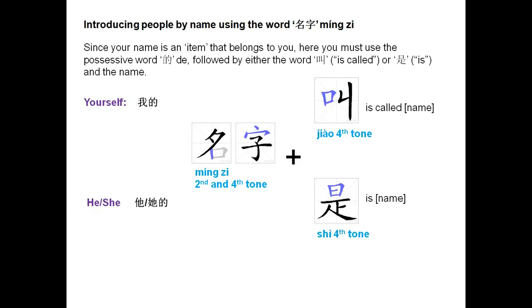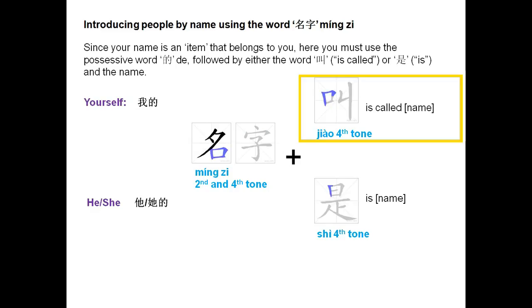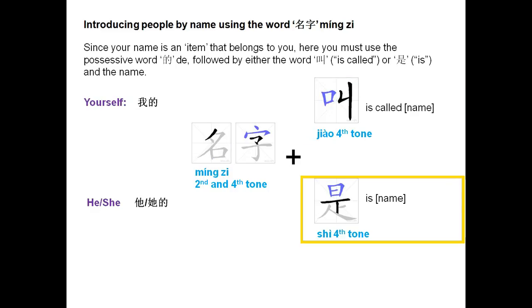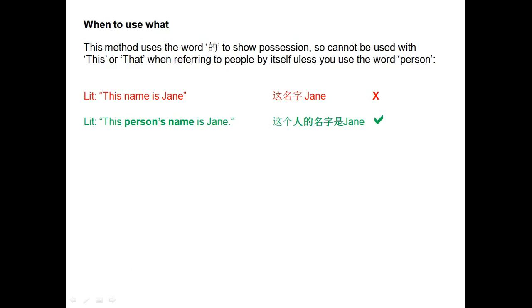He or she follows the same pattern. You can say 他的名字叫 or 他的名字是, and both mean his or her name is.